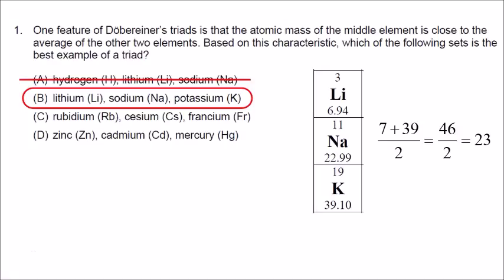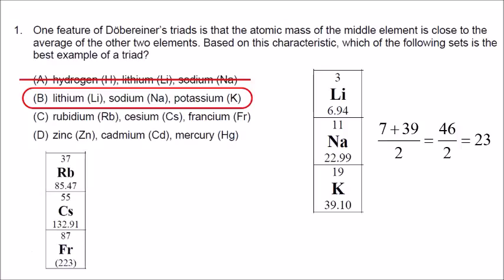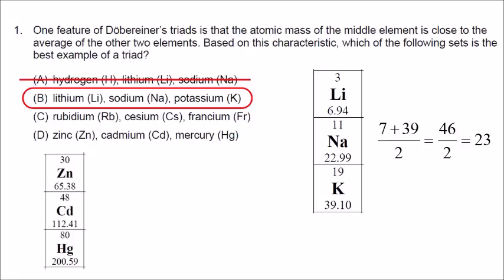Let's prove why C and D are not examples of triads. For rubidium, cesium, and francium, the average of 85.5 and 223 is around 154, which is not close to the mass of cesium. And for zinc, cadmium, and mercury, the average of 65.4 and 200.6 is around 133, which is not close to the atomic mass of cadmium. Again, B is the correct answer.